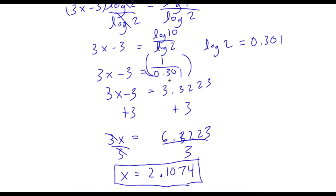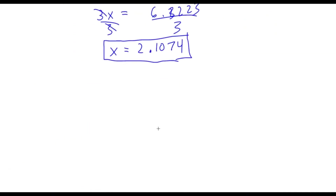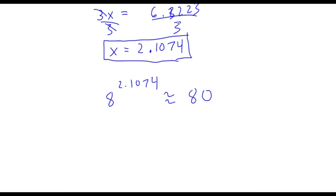Now remember our original equation was 8 to the power of x is equal to 80. So if I plug in 2.104 into my calculator — 8 to the power of 2.104 — it is indeed approximately equal to 80. It's not the exact value of 80, but it is approximately equal to 80.